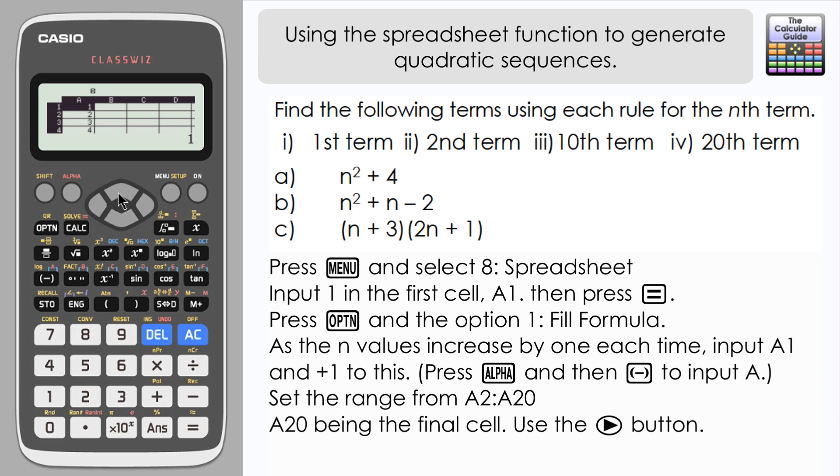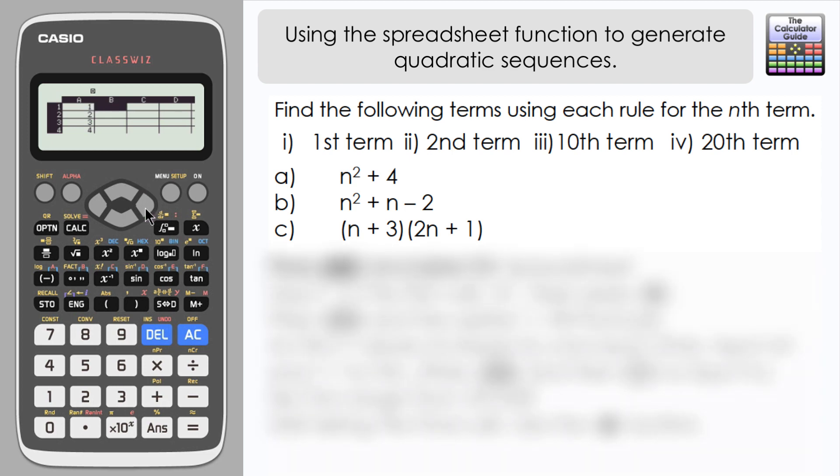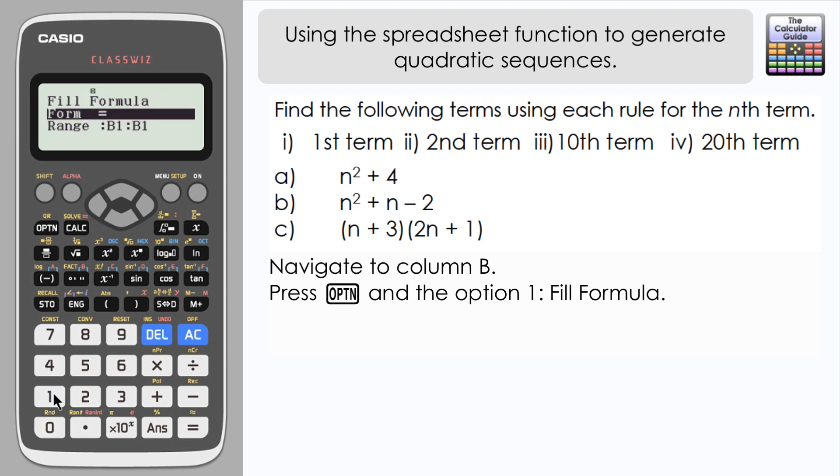I'm going to navigate to column B now. In this column I'm going to generate my sequence n squared plus 4, and I'm going to start off straight away with the formula. So I'm going to press option and fill formula, and in the formula line what I'm going to do is to copy out the nth term sequence except where I have the n value, I'm going to write A1.